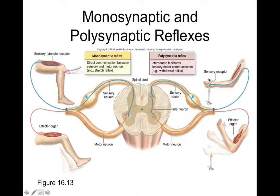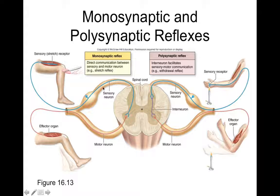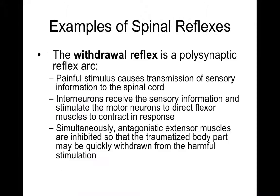Polysynaptic reflexes involve more complex pathways with multiple synapses and interneurons. The withdrawal reflex is an example: a painful stimulus sends pain information to the spinal cord, which synapses on an interneuron that synapses on a motor neuron, causing you to withdraw from the stimulus. Because it's polysynaptic it takes a little longer to respond. The patellar reflex is ipsilateral — same leg tapped, same leg moves. A burning hand causing the arm to lift is also ipsilateral.